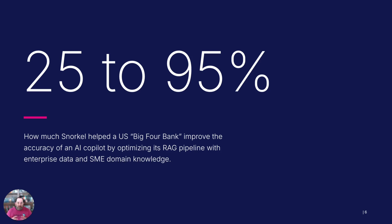So what happens when you put all these things together? We worked with one of the very big banks in the US — they were building a co-pilot around document Q&A. Out of the box, they were sitting at about 25%. With the tips I just mentioned, as well as a handful of others, we were able to bring them up to 95%. So hopefully I got close to five minutes here, and we'll see you soon with the next AI in 5 episode. Bye, all.